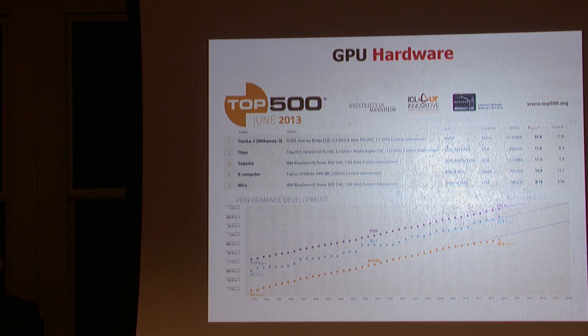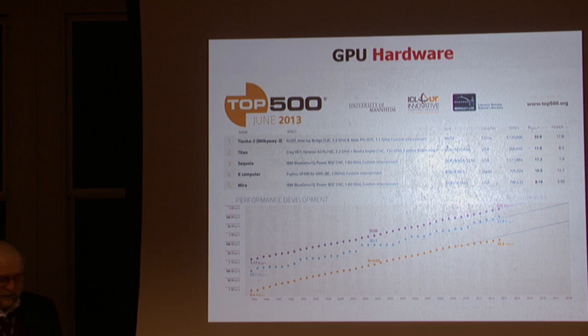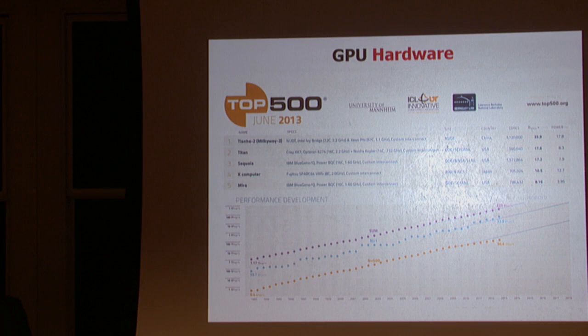Twice per year, the big computing players come together and create a so-called Top 500 list. This particular slide is from June 2013, showing the nice performance growth we've seen over roughly 30 years on a log scale. At that time, the Tianhe-2 — the Milky Way computer in China — had taken first place; the Titan at Oak Ridge National Laboratory was second; and a K computer in Japan was also in the rankings.